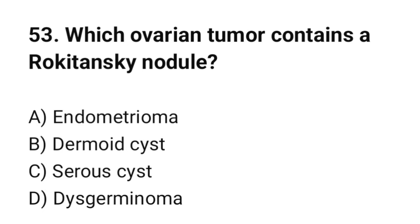Question number 53. Which ovarian tumor contains a Rokitansky nodule? The correct option is B: Dermoid cyst.